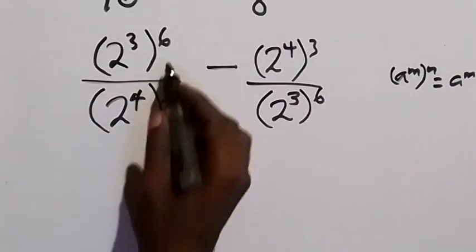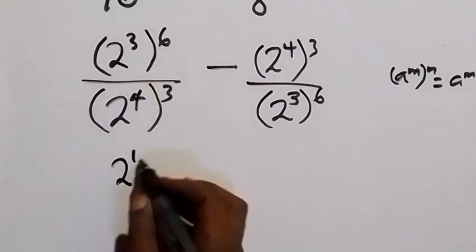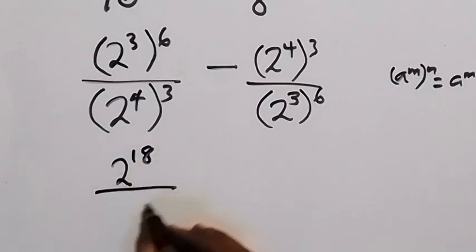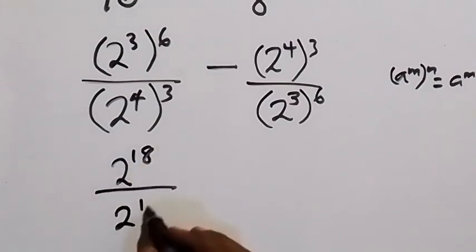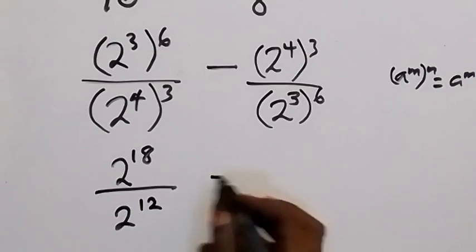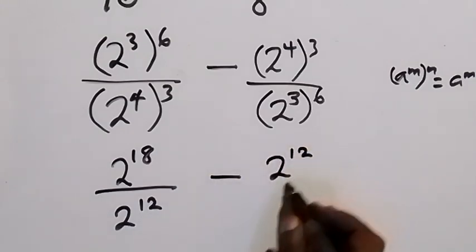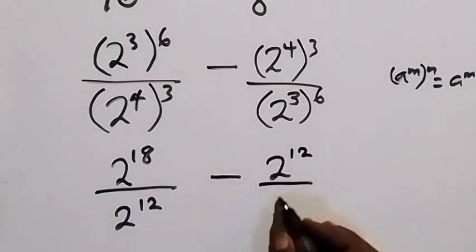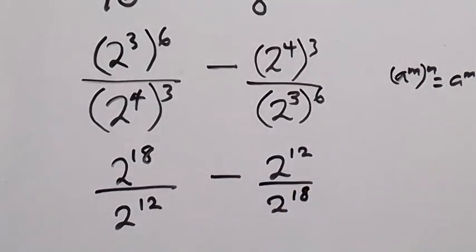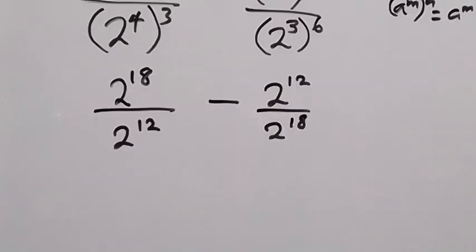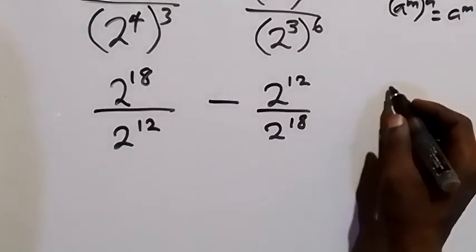This becomes 2 raised to power 18, divided by 2 raised to power 12, then minus 2 raised to power 12, divided by 2 raised to power 18. From here we can also apply the law of indices.